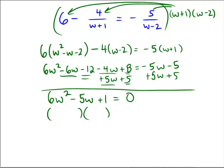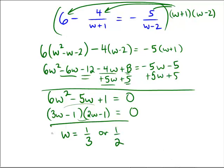I can see the 6 and the 5. It factors with a 3w and a 2w — giving us 3w minus 1 times 2w minus 1, since we get the minus 3 and minus 2 terms. So by the zero product property, w equals 1 third from the first binomial and w equals 1 half from the second binomial. Our answers are w equals 1 third or w equals 1 half.